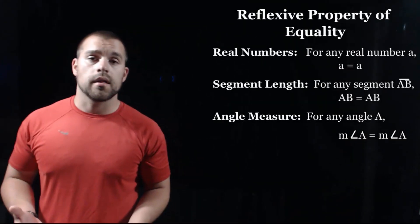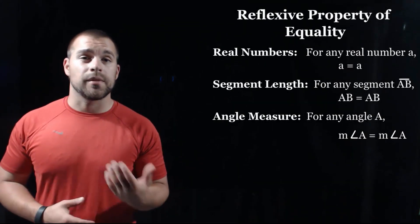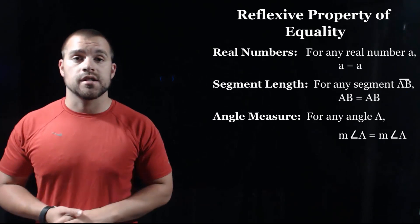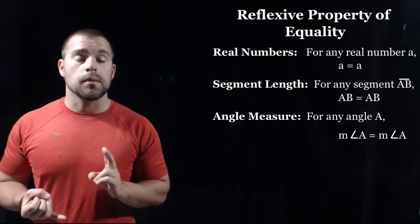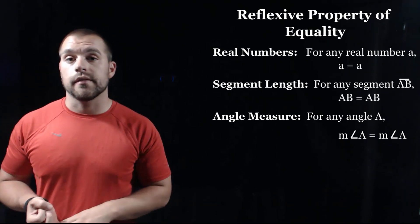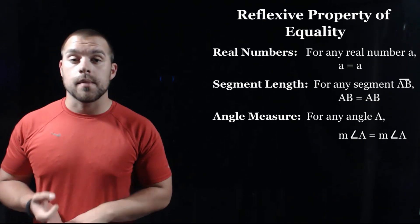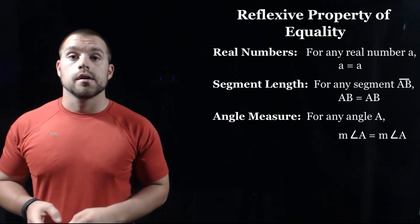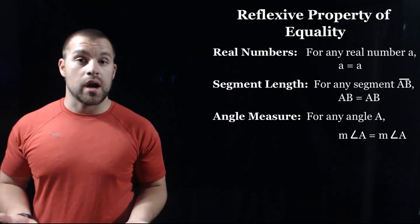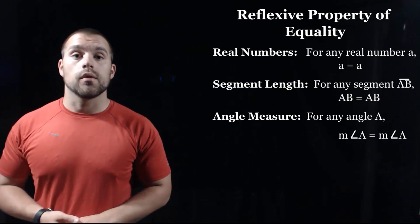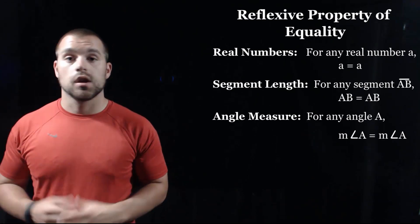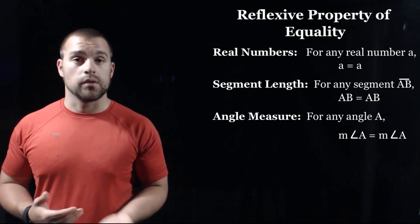The first new property that we're working with is something called the reflexive property, and there are three different cases that we could have. We could be looking at a real number, the length of a segment, or the measure of an angle. For a real number, let's say we're dealing with some real number A — the reflexive property says that A equals A. A number is equal to itself.